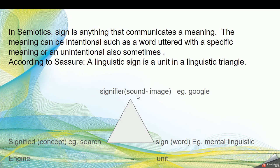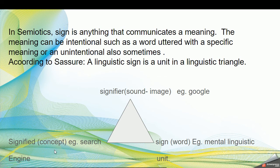One unit of this triangle is the signifier — the signifier means the sound or image. For example, when we see the Google logo, that picture is the signifier. The signified is the concept or meaning we understand from that image — in this case, that it is a search engine. So what we see is the signifier, and the concept related to that thing is the signified.